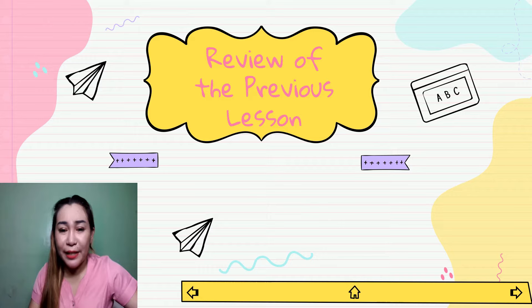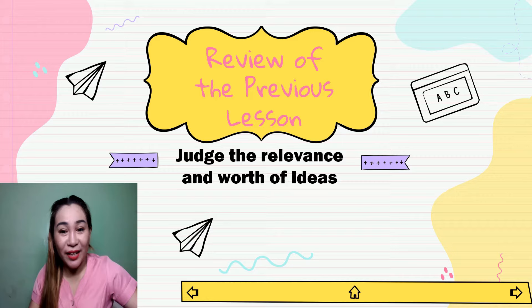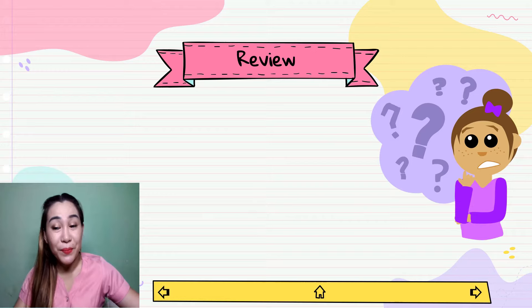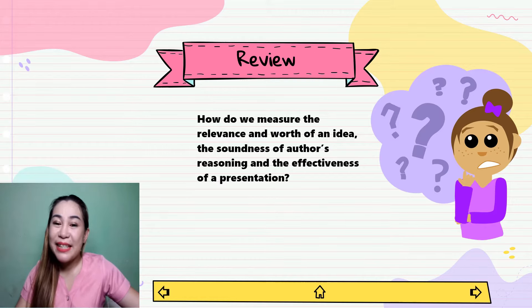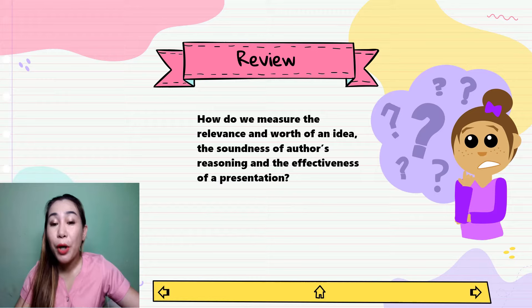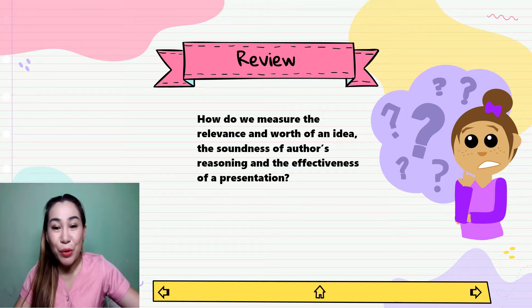Can you still remember our first lesson last time? We discussed about judging the relevance and worth of ideas. For our review: how do we measure the relevance and worth of an idea, the soundness of the author's reasoning, and the effectiveness of a presentation? A relevant idea should contain information that supports the point or subject of the material in the form of an article, conversation, and even pictures, whereas the truth is something that has been proven by facts or sincerity.